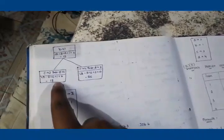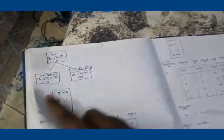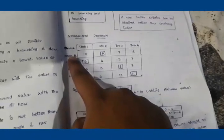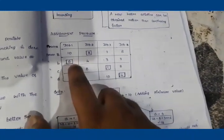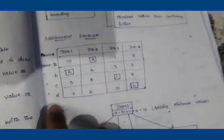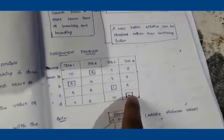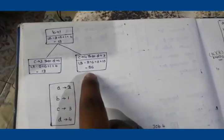For C=Job 3 and D=Job 4: starting from the root, A is assigned to Job 2 (cost 2), B is assigned to Job 1 (cost 6), C is assigned to Job 3 (cost 1), and D is assigned to Job 4 (cost 4). Total = 2 + 6 + 1 + 4 = 13.